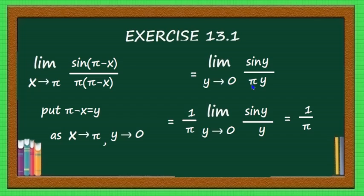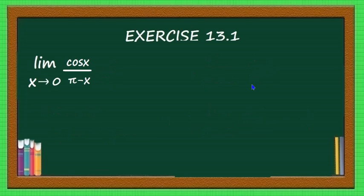That is the answer for that problem. Now see the next problem: limit x tending to 0 of cos(x) divided by (π - x). If you put x equal to 0, it becomes cos(0) divided by (π - 0). Cos 0 equals 1, so the result is 1/π, which is the limit of the function.